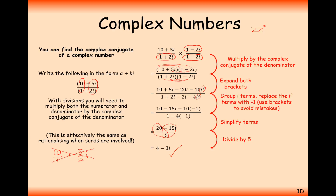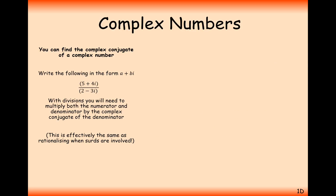That is how you divide two complex numbers — you times the top and bottom by the complex conjugate and then simplify. Let's have a go at another one: 5 plus 4i over 2 minus 3i. Pause the video if you want to try this one. What you need to do is take the denominator and times the top and the bottom by its complex conjugate.